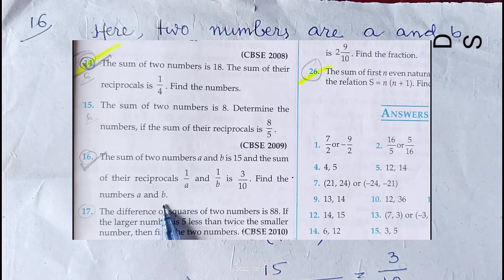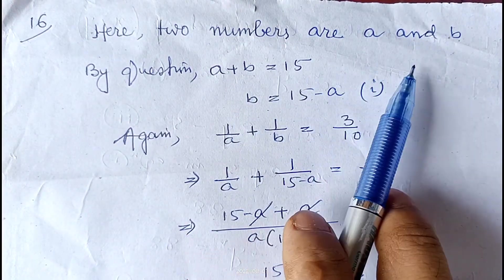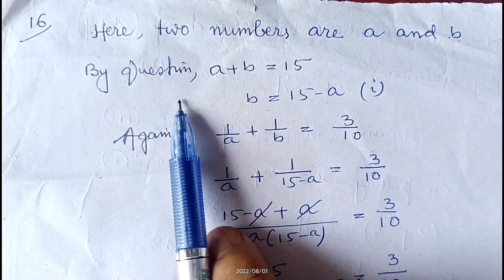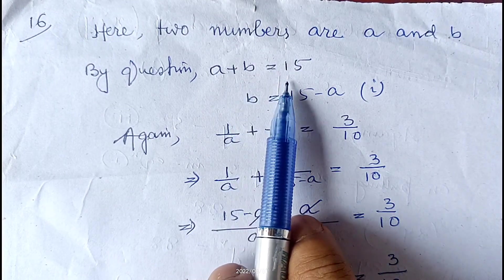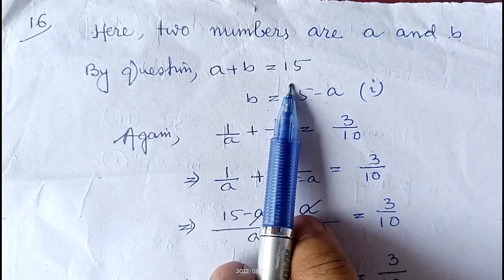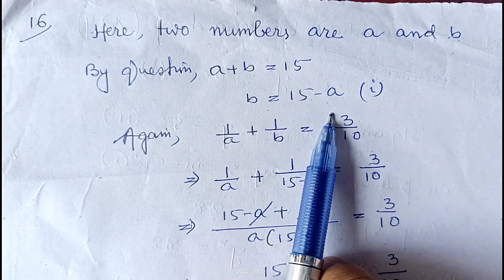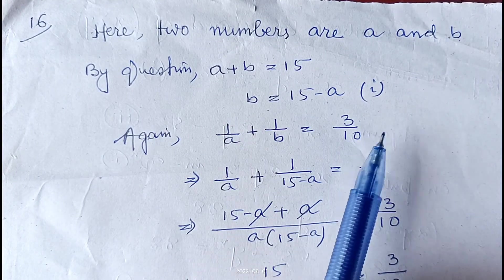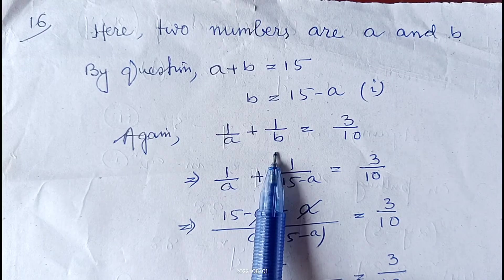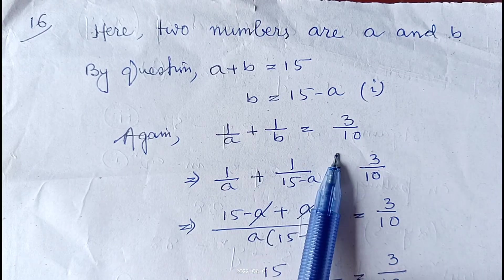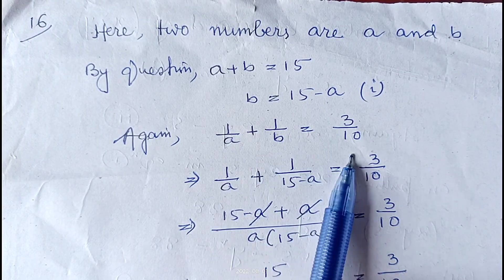Find the numbers a and b. As given in the question, the numbers are a and b. The sum of the numbers, a plus b, is 15. So from here I can write b equals to 15 minus a — let it be equation number one. Again, it is given that the sum of the reciprocals is 3/10, so 1/a plus 1/b equals to 3/10.